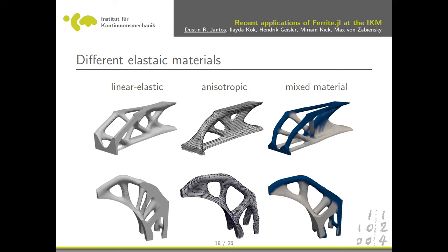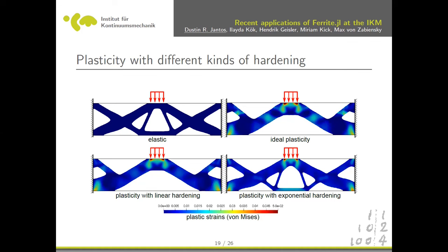We do this for different materials: elastic isotropic on the left, anisotropic in the middle — where we can also add fiber direction as an additional design variable — and on the right it works for multiple materials: two materials with different Young's modulus depending on tension and compression. The blue material is always under tension and the gray always under compression. Depending on the material type you always get a different optimal topology. This also works for plasticity, with additional internal variables and different hardening behavior giving different optimal results.